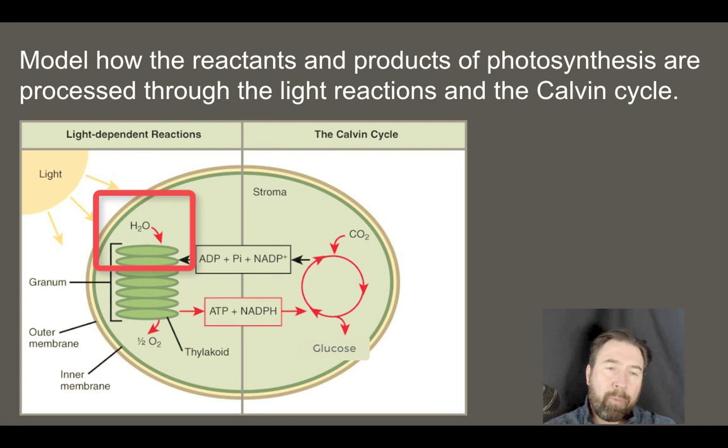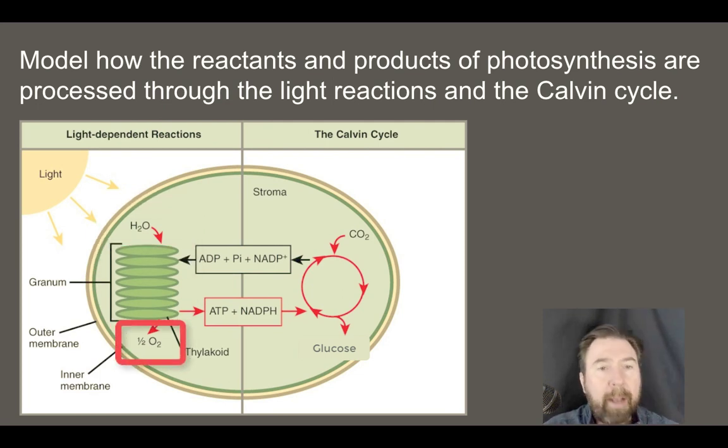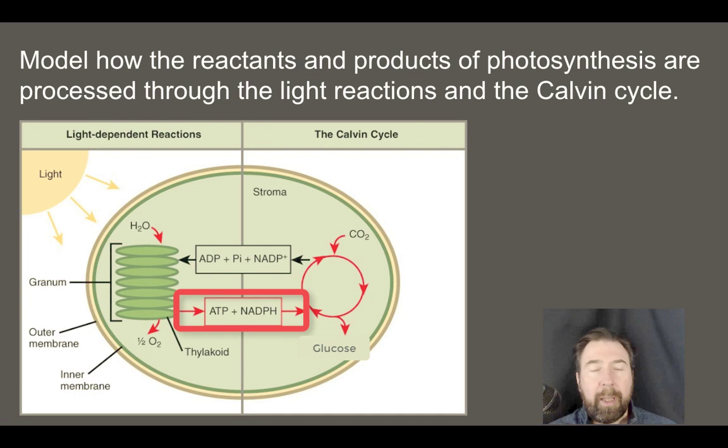Within the thylakoid you will have pigments and the pigments will absorb that light. When the light strikes those thylakoids it is going to power the ripping apart of water. When the water is ripped apart, oxygen will be given off as a byproduct and the hydrogens that are taken off will be used to make ATP and will also be used to make NADPH. The production of ATP is going to be done by moving hydrogens back and forth across the membrane, and then those hydrogens are captured in the molecule of NADPH.